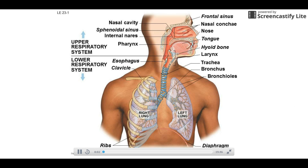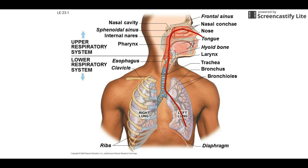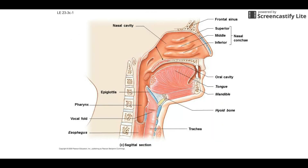This quick video is going to cover the basic anatomy of the respiratory system. We're going to start here and follow the pathway that air would take going all the way down to the air sacs at the very end. That's our plan, so let's jump right into it.